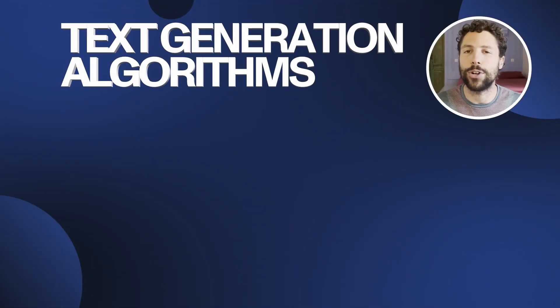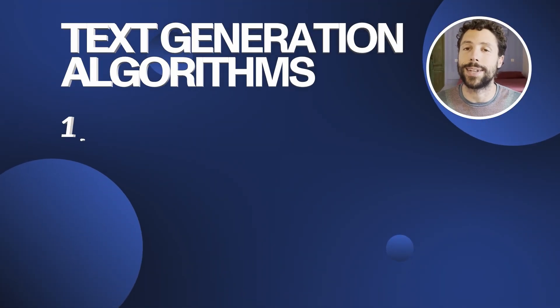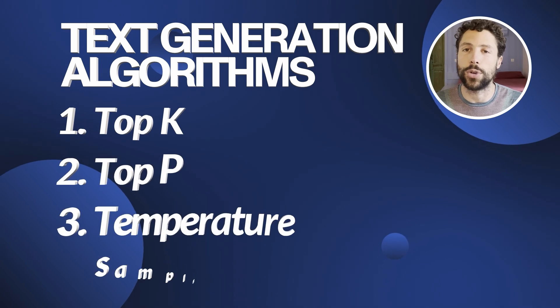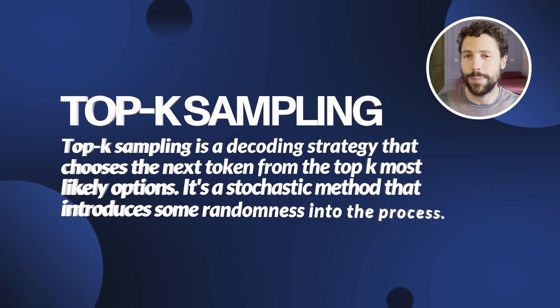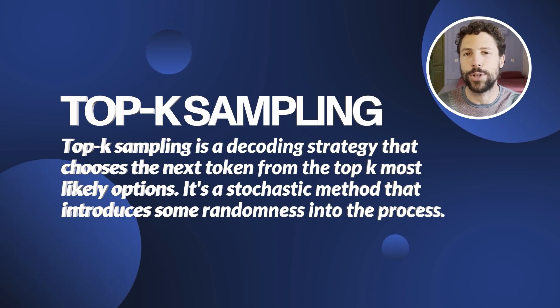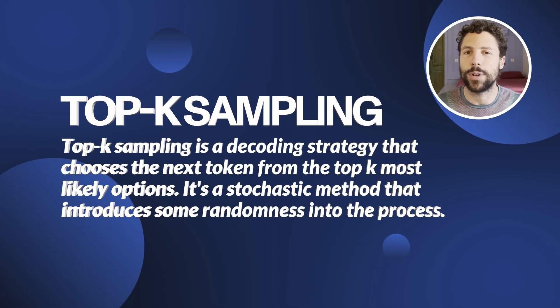So how do we introduce randomness in practice? The basic and most common stochastic decoding strategies — text generation algorithms that use some randomness when selecting words or tokens — are called TOP-K, TOP-P, and temperature sampling. Let's start by learning how these work.